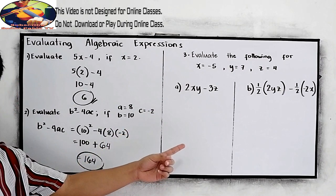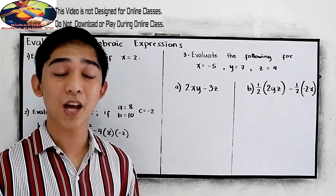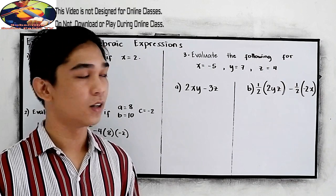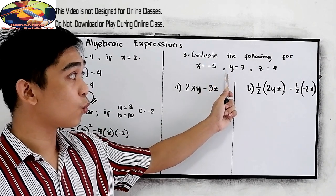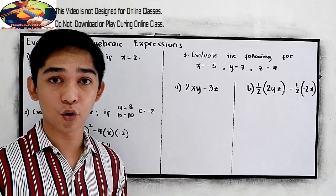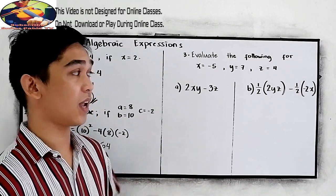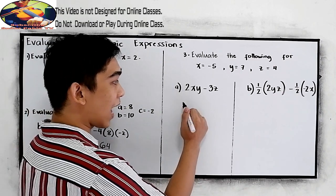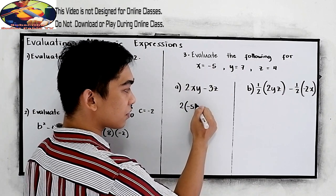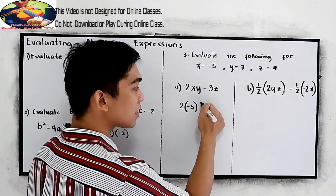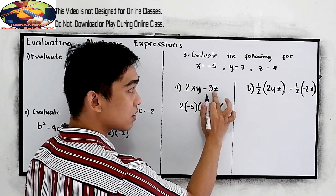Now, can you try number 3? If you want to pause the video, then after answering, resume watching to check your answers. Evaluate the following for x is equal to negative 5, y is equal to 7, and z is equal to 4. For letter A, 2xy minus 3z. Copy 2. The value for x is negative 5, the value for y is 7, minus 3 times z is 4.